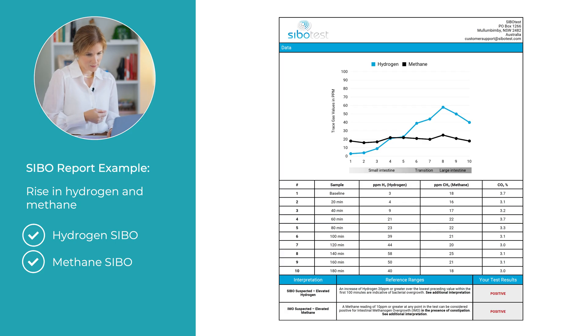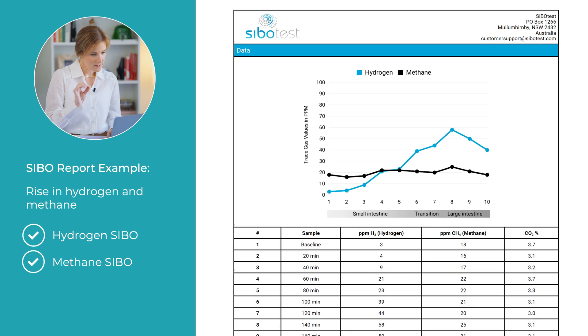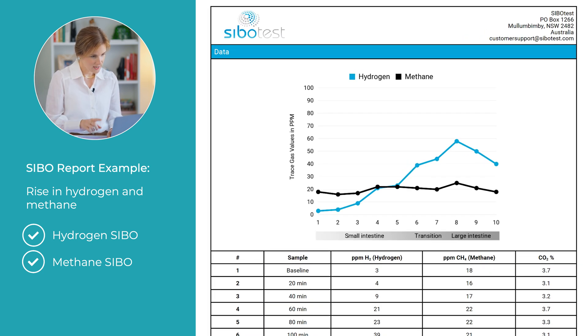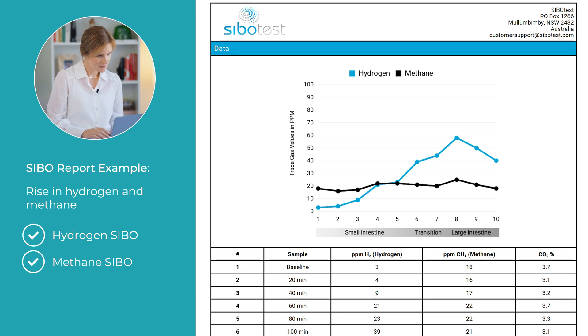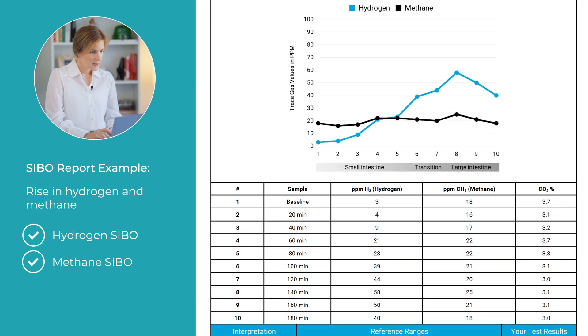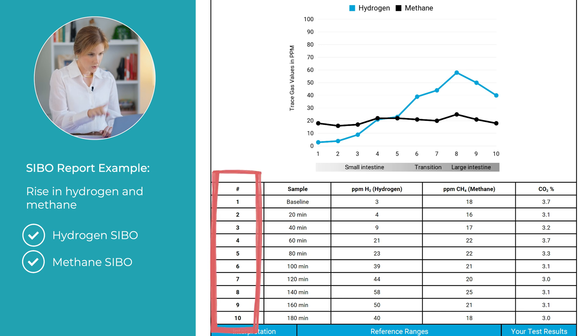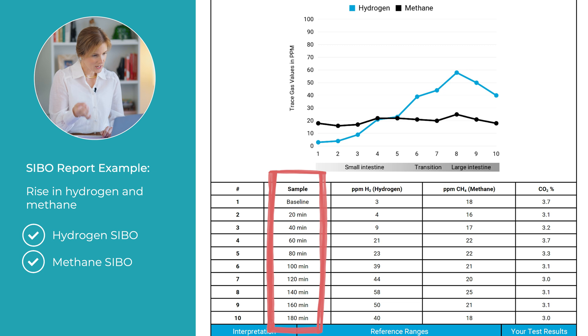Let's start by understanding the information listed on a typical SIBO breath test report. Your report will likely have both a graph and a table with information for you to review, like this one pictured from SIBO Test. The graph is a visual representation of the information in the table, so let's chat through the table first. Your SIBO breath test report starts with a column that lists the sample numbers, next is the sample time intervals, starting with a baseline reading.